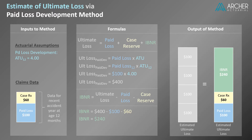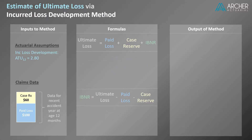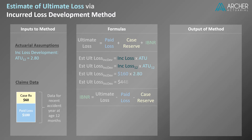Let's move ahead to the incurred version of this method. The incurred loss development method is analogous to the paid version except that incurred loss is used in place of paid loss. Recall that incurred loss equals paid loss plus case reserves. In this example, we're using the same claims data evaluated at age 12, and the corresponding loss development assumption is an incurred age-to-ultimate factor at age 12. Per the incurred loss development method, an estimate for ultimate loss equals incurred loss times the age-to-ultimate factor. In our example, this equals 160 times 2.8, or $448.